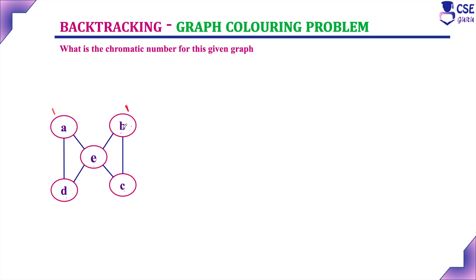A and B can be assigned the same color. D needs a different color. C and D are not adjacent, so you can give them the second color. A and B get color number 1, D and C get color number 2. For vertex E, can you assign color number 1? No, because color number 1 is already assigned to its adjacent vertices A and B. Can you assign color number 2 to E? No, because adjacent vertices D and C are assigned color number 2. So you require one more new color — color number 3 will be assigned to E.